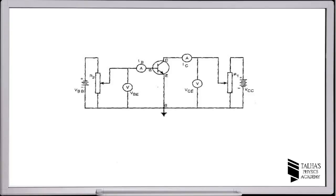Two voltage sources, VBB and VCC, are also connected along with two potentiometers in order to vary the voltages, so that we can study the variation of voltage and current.